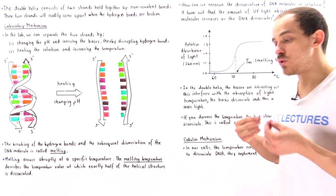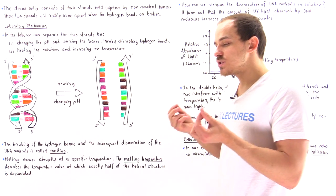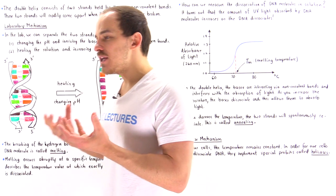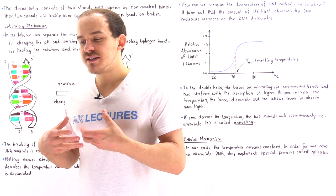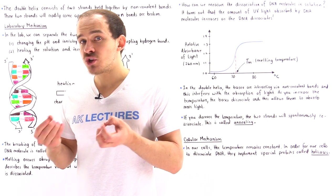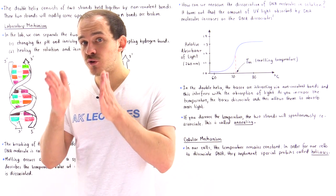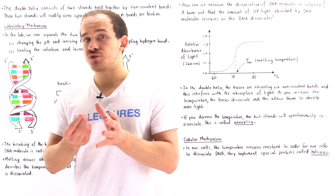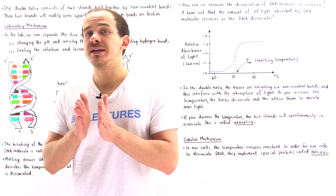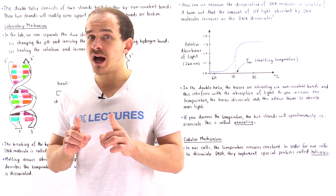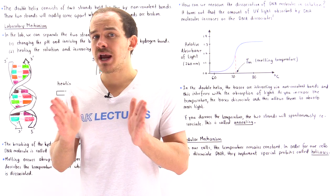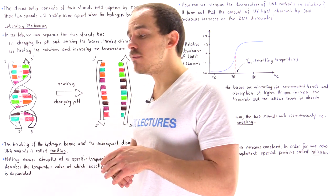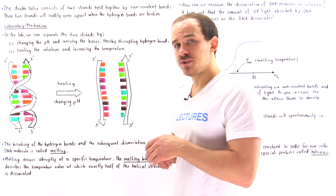What happens once we break those hydrogen bonds? If we break the hydrogen bonds — which hold the two nucleic acids together — then that double helix structure will begin to break, because as the hydrogen bonds break, the two strands of DNA will begin to dissociate.